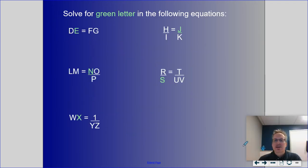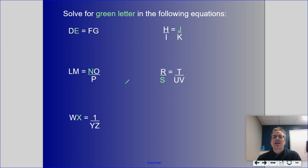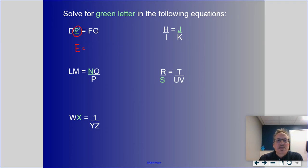Here are five practice examples — the variable in green is what we're solving for. I'll do the first one with you: solving for E. I need to get E by itself, so D has to cross to the other side. When D crosses the equal sign, it goes into the denominator. So E equals F times G over D.